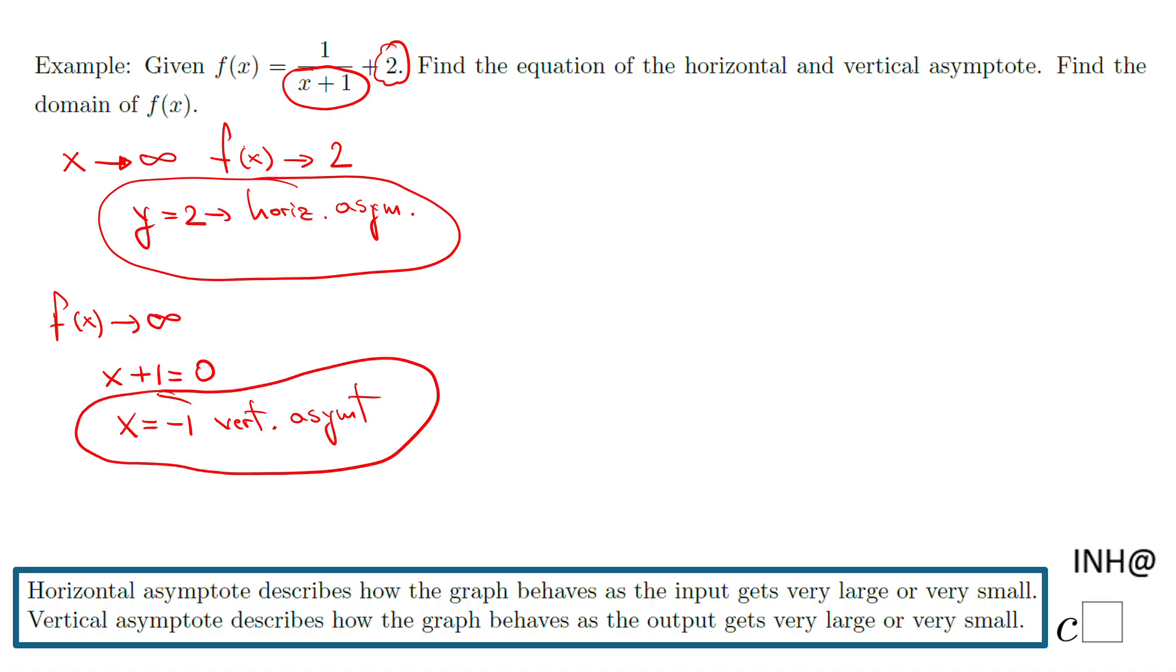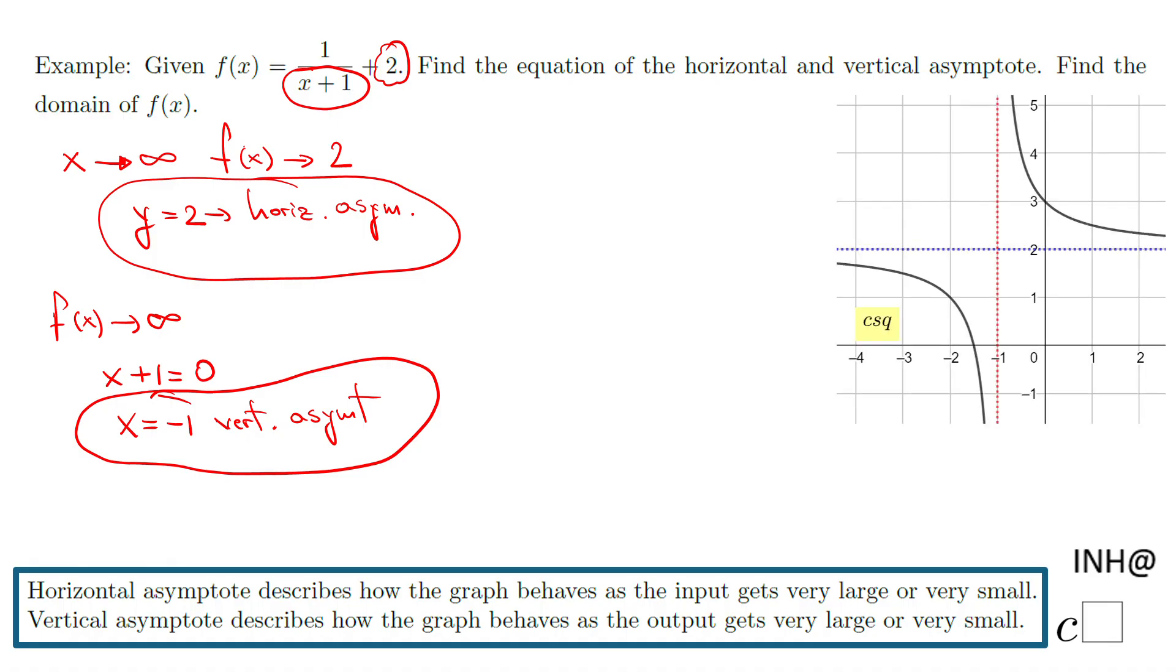I think it's very simple, and let me explain using the graph. The graph is another way to see the asymptotes. You notice when x is getting closer to negative one from the left side, the graph is up there.